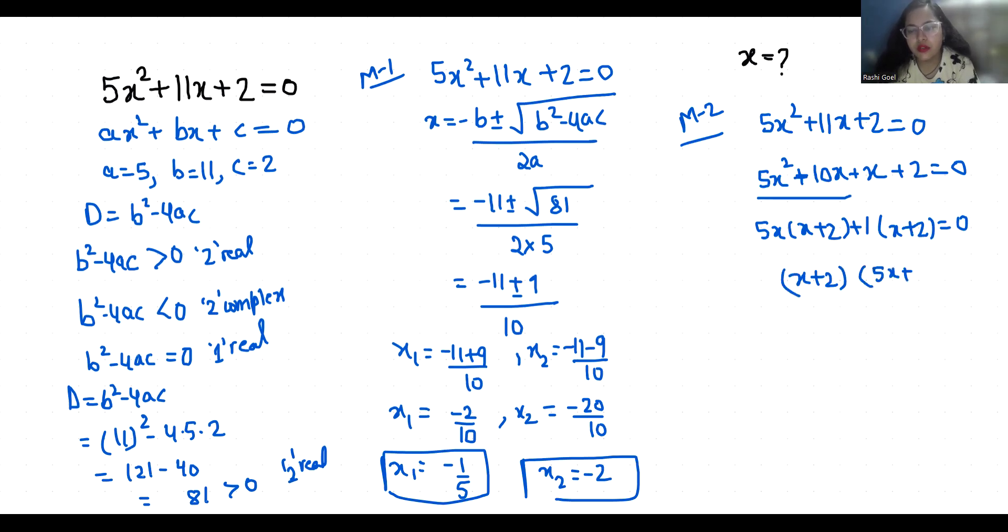So x + 2 = 0, which gives x = -2. And 5x + 1 = 0, so 5x = -1, which gives x = -1/5. These are the two values of x.